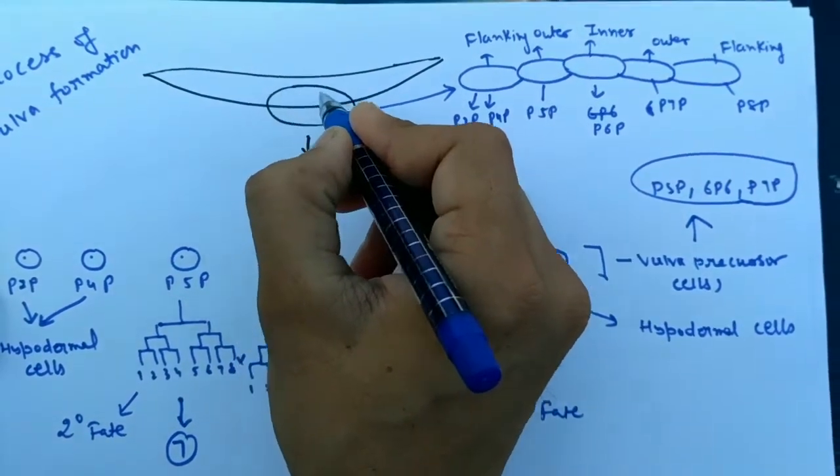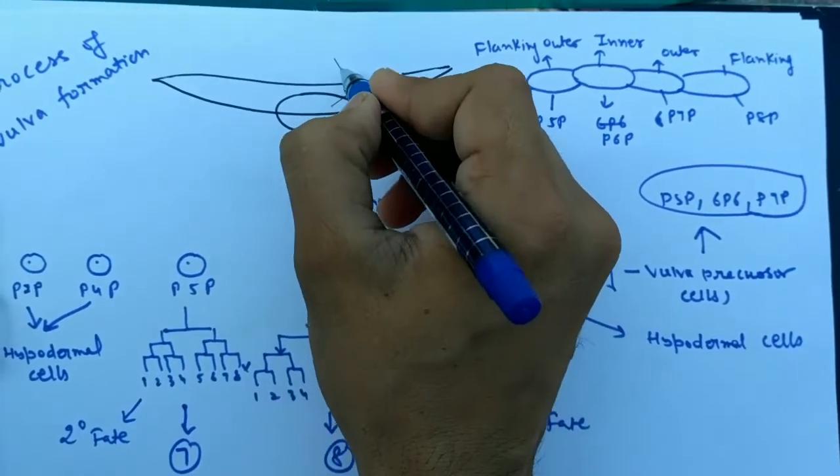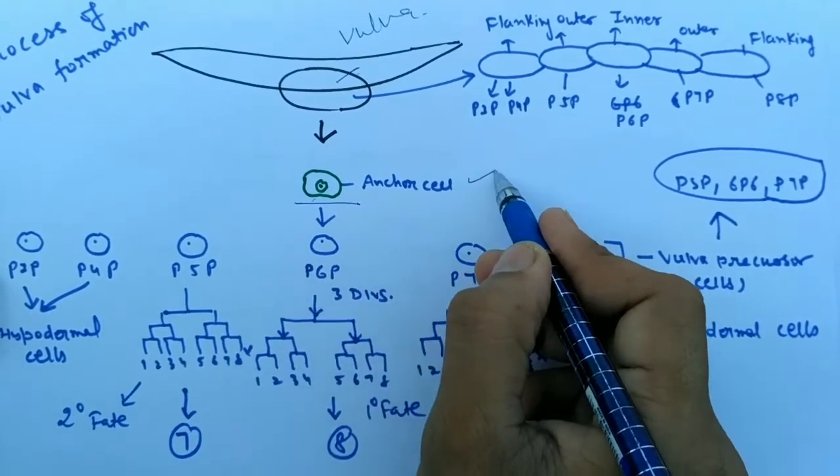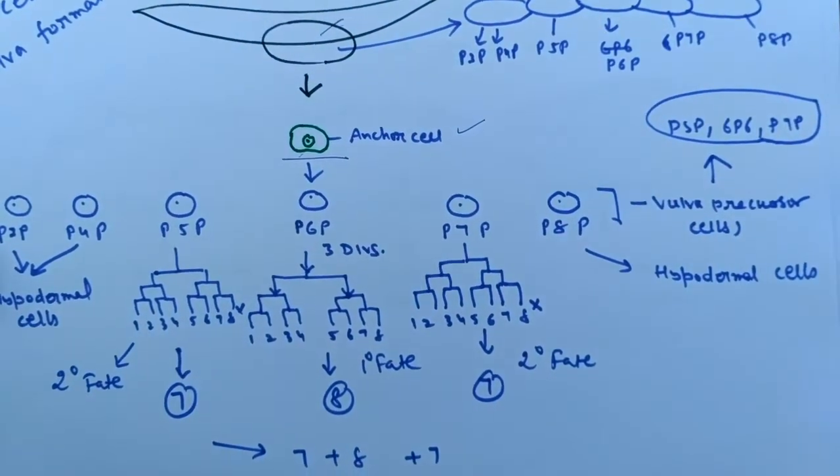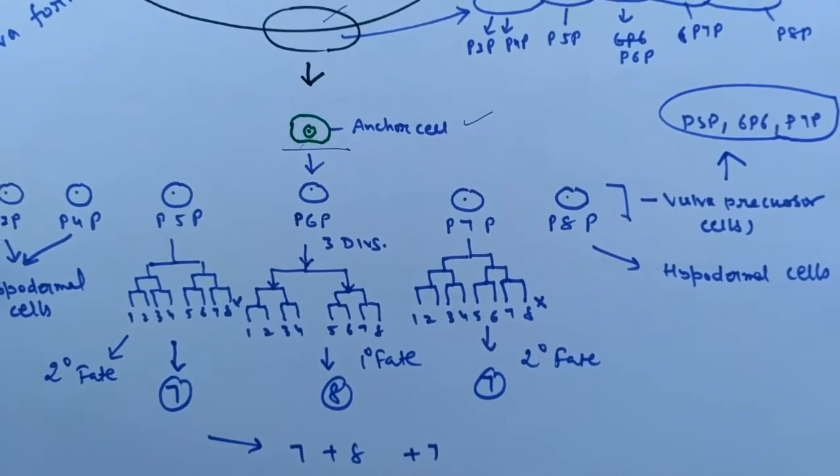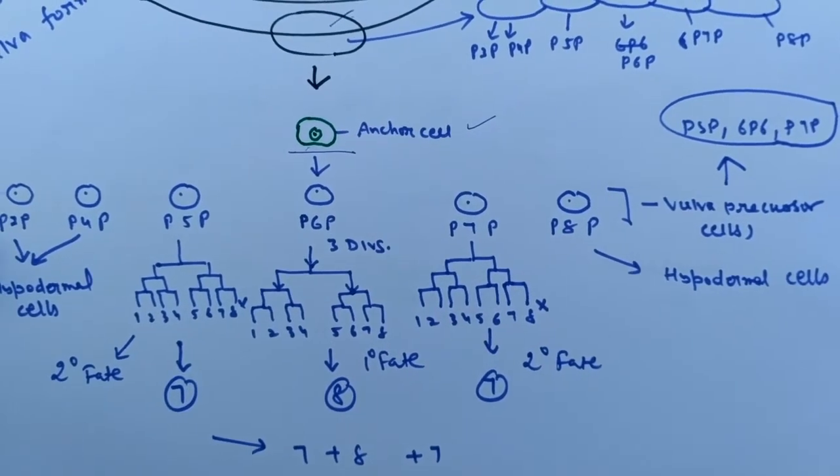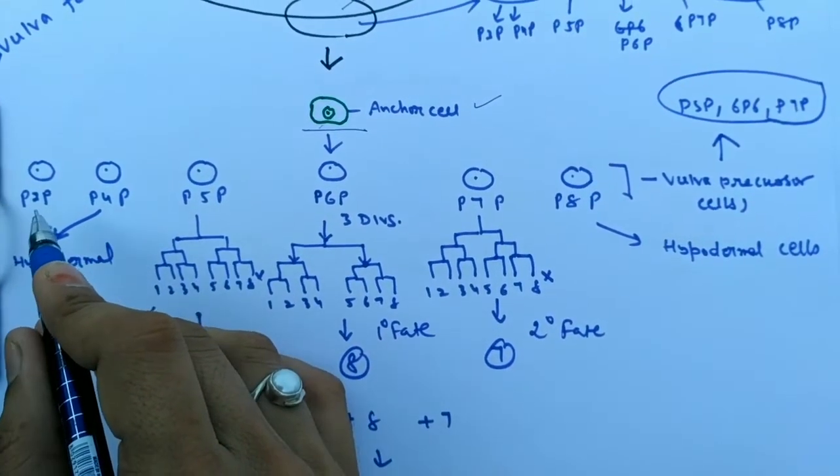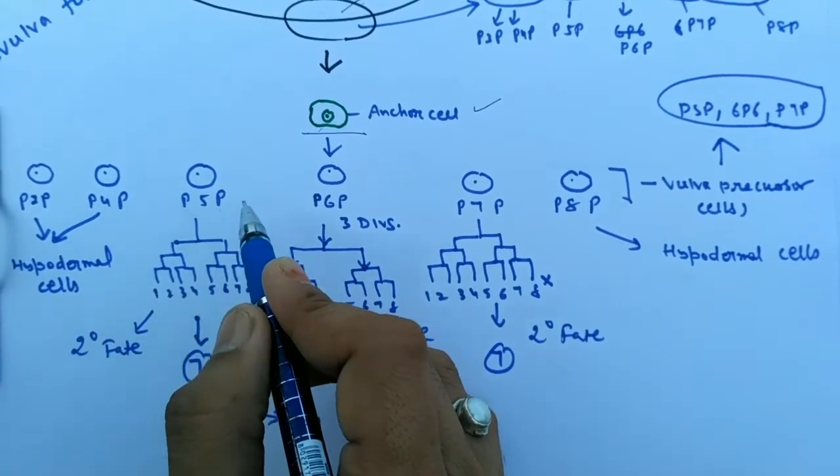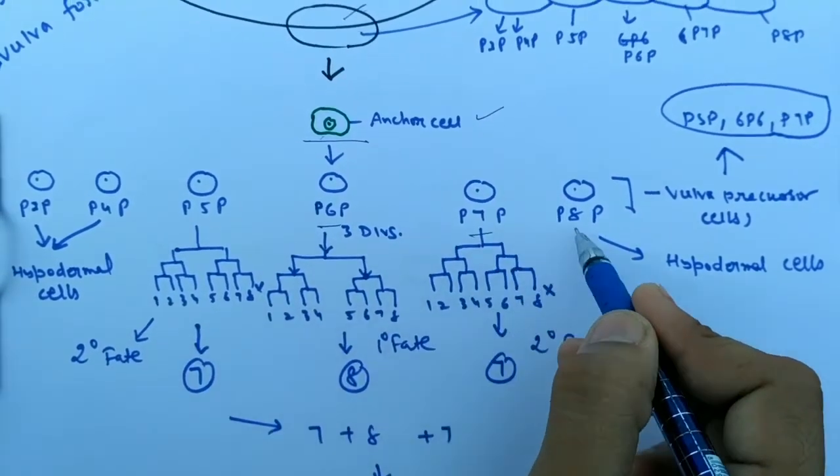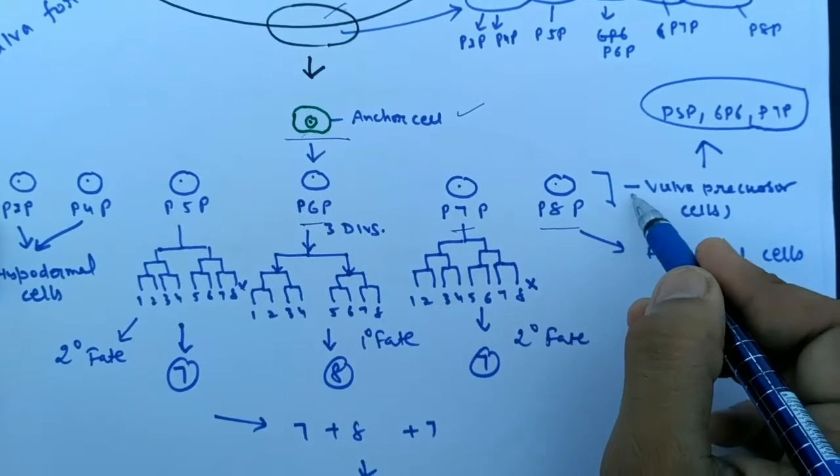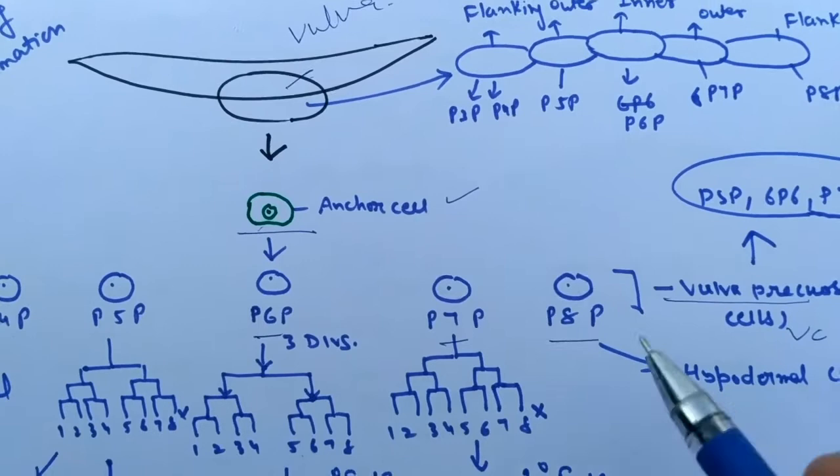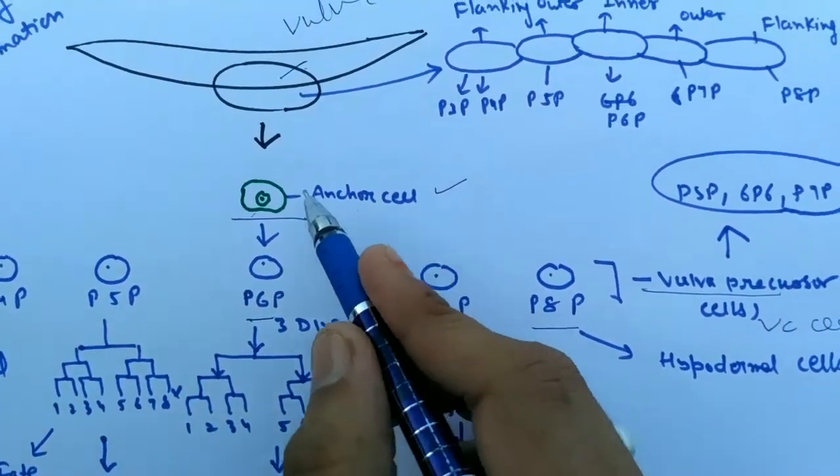I'll circle this area particular to the vulva. Here the green labeled cell is the anchor cell, a single cell that is the main progenitor cell that regulates the growth of the vulva. In the lower region are P3P, P4P, P5P, P6P, P7P, and P8P. All these are vulva precursor cells or VPC cells. The anchor cell controls these cells.